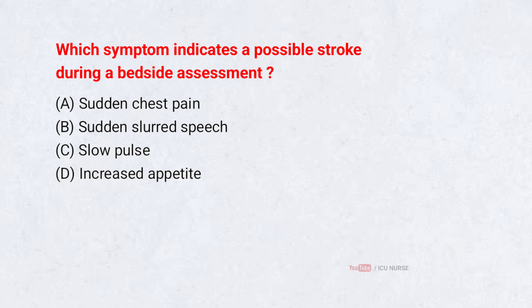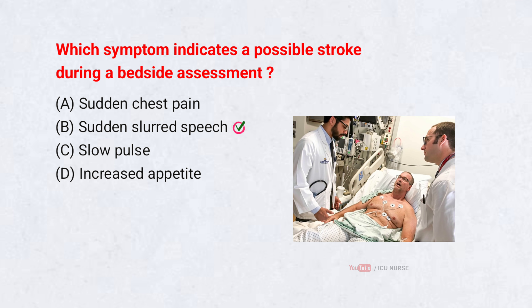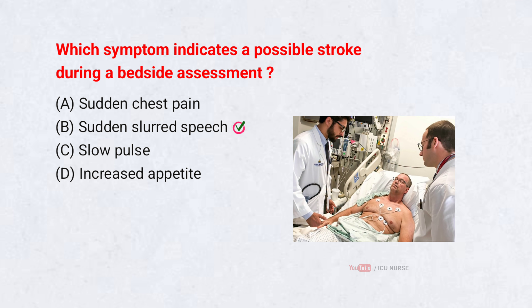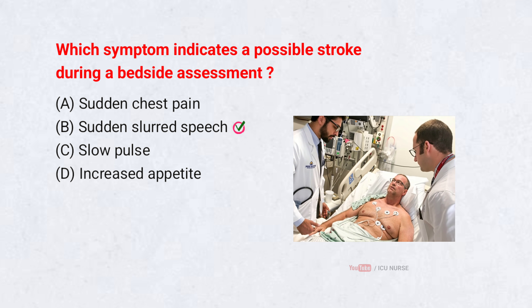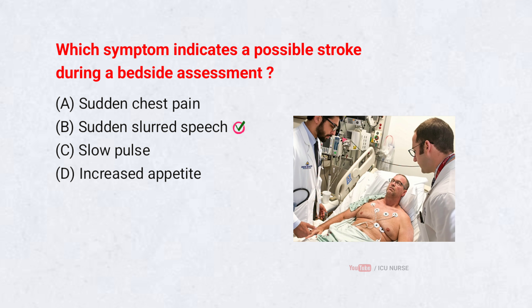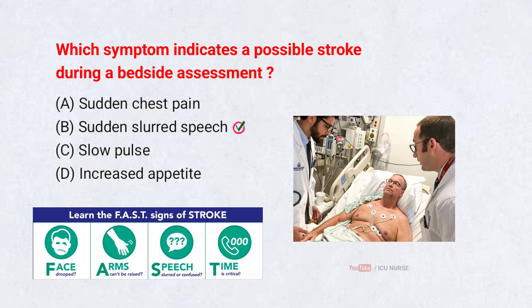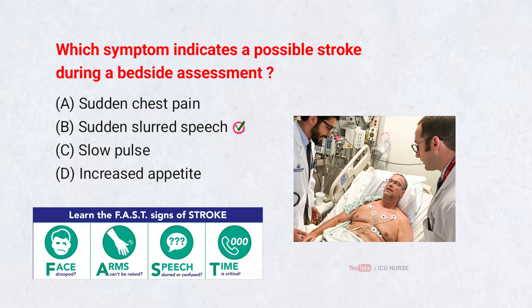Which symptom indicates a possible stroke during a bedside assessment? A. Sudden chest pain. B. Sudden slurred speech. C. Slow pulse. D. Increased appetite. Correct answer: B. Sudden slurred speech. Sudden slurring of speech is a classic FAST sign of stroke, requiring immediate medical attention. FAST stands for face, arms, speech, time.